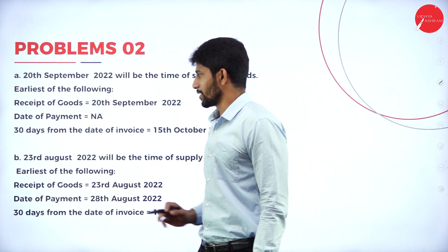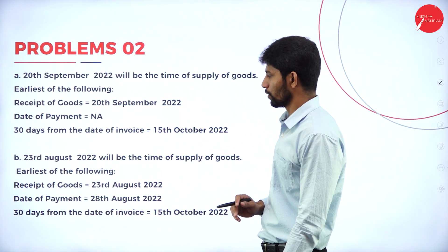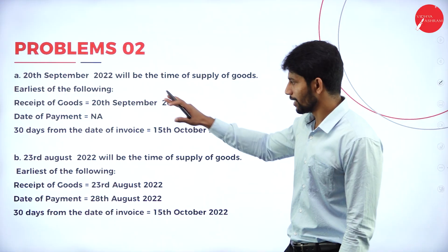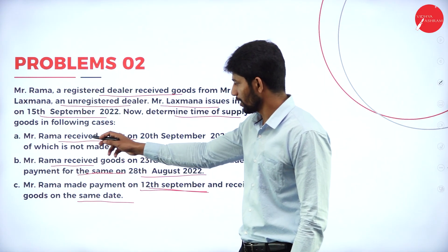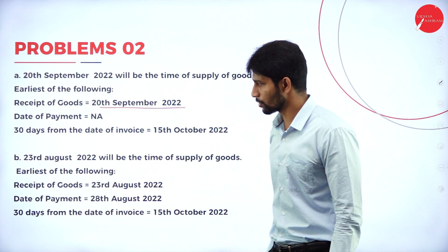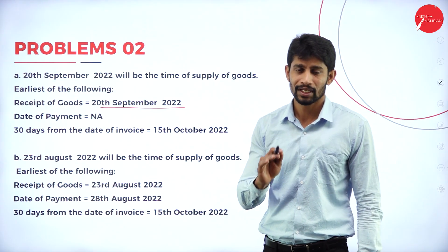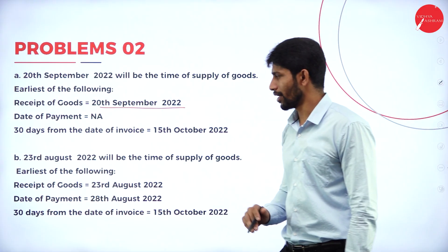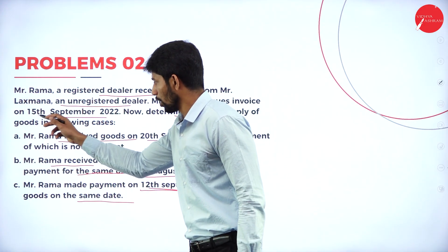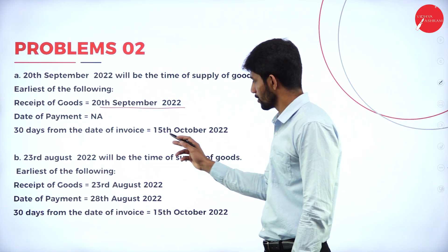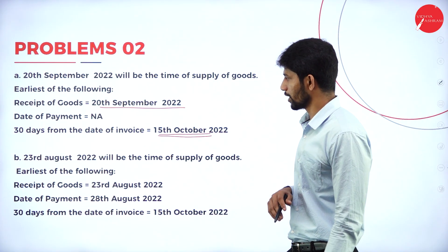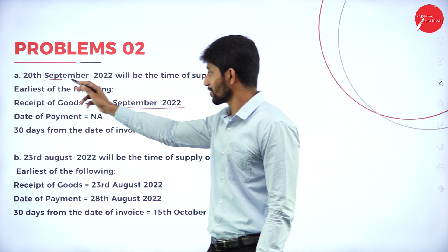Case 1: Date of receipt of goods — when goods are received by the buyer, that date is the date of receipt. In case 1, goods are received on 20th September 2022. Date of payment is not given — not available. 30 days from the date of invoice: invoice was issued by Lakshmana on 15th September, so calculating 30 days gives 15th October 2022. In these two available dates, the earliest is 20th September 2022. That will be the time of supply of goods.